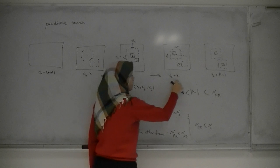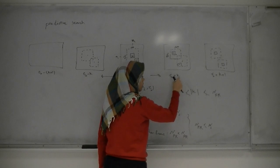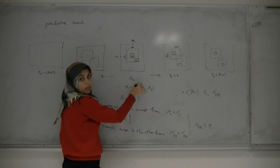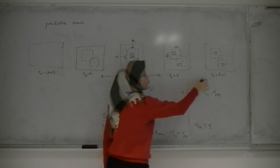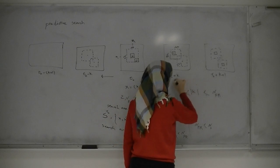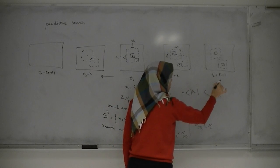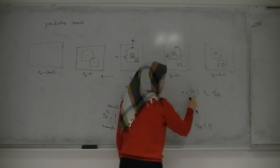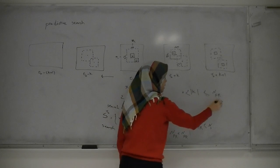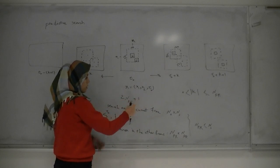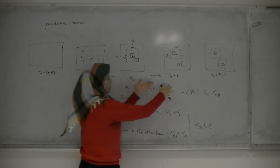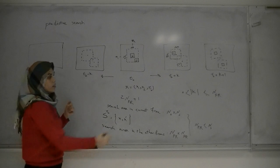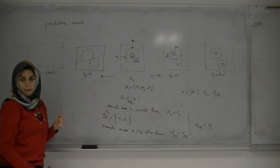K is the step index. If frame one, frame two... K is always less than NFR. For example here we have just two steps and NFR is just two. Always K is less than NFR.